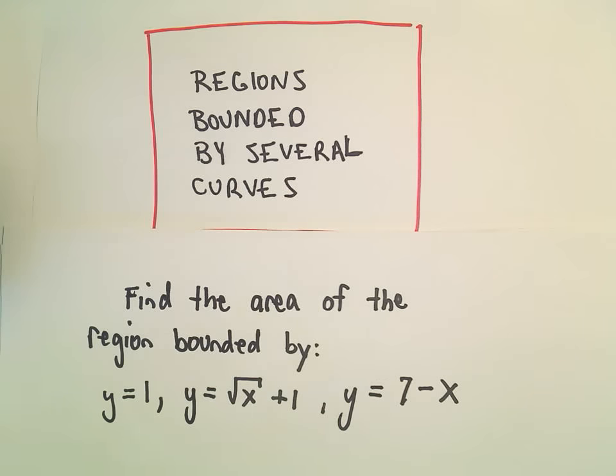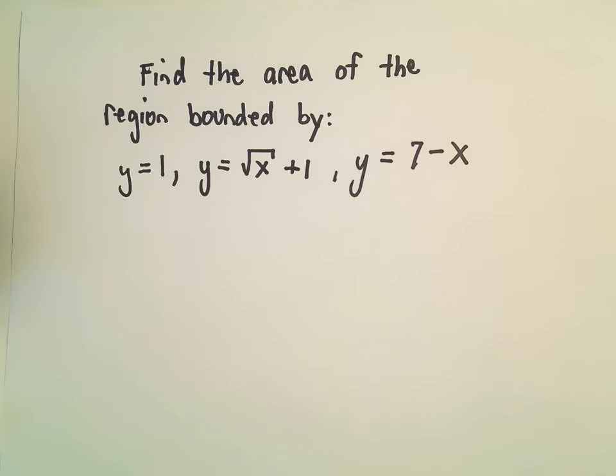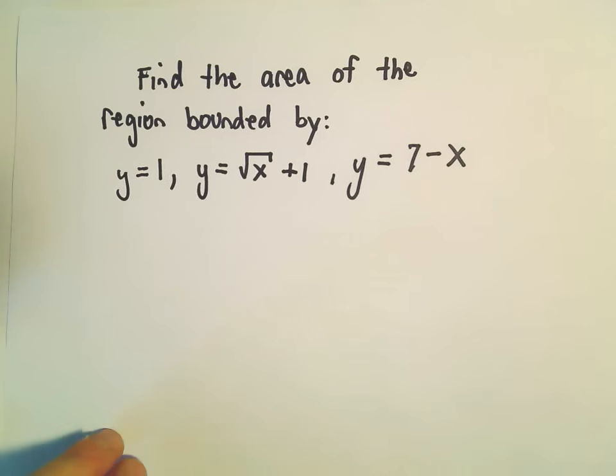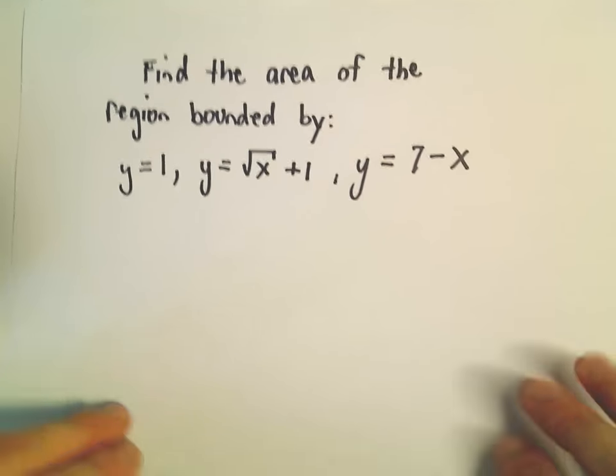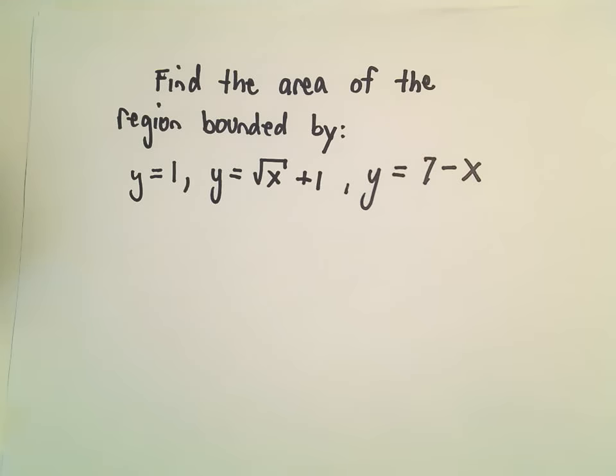Okay, in this video we're going to do an example of finding an area where the region is bounded by a couple different curves. In this one it's going to be bounded by the line y equals 1, y equals the square root of x plus 1, and then y equals 7 minus x.